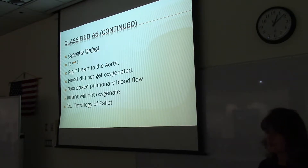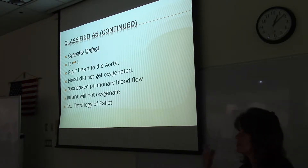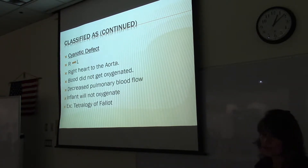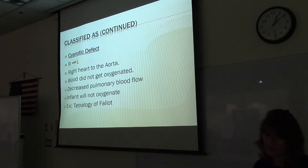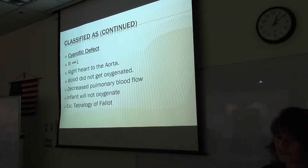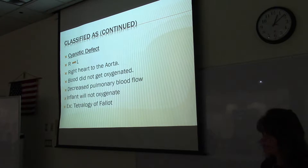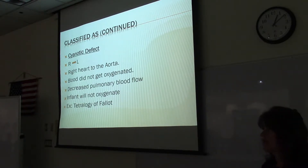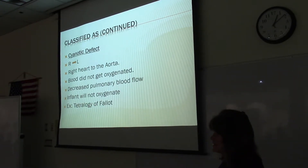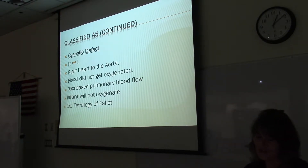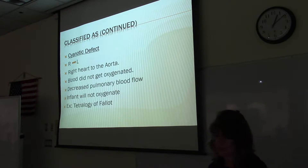A cyanotic defect means that the blood goes from the right side of the heart, doesn't travel to the lungs, and goes into the aorta without picking up any oxygen. So from the right heart to the aorta — the blood did not get oxygenated. There's decreased pulmonary blood flow, and the infant will not oxygenate well. Obviously they'll oxygenate a little bit, because if they're not oxygenating at all they'd be dead in four minutes. It's an exaggeration to show that blood is not flowing to the lungs like it normally does.